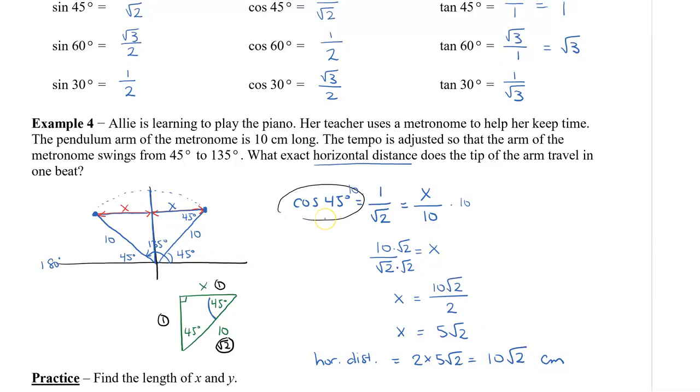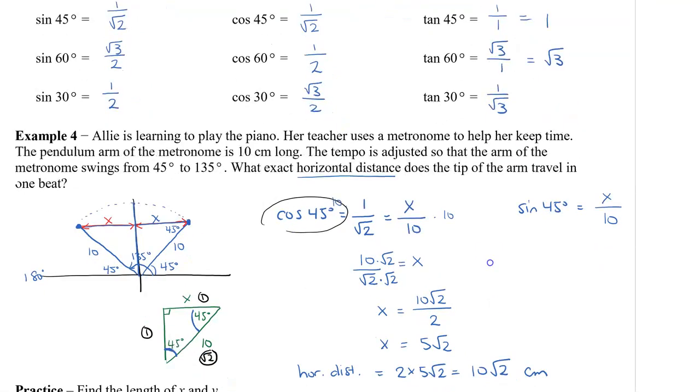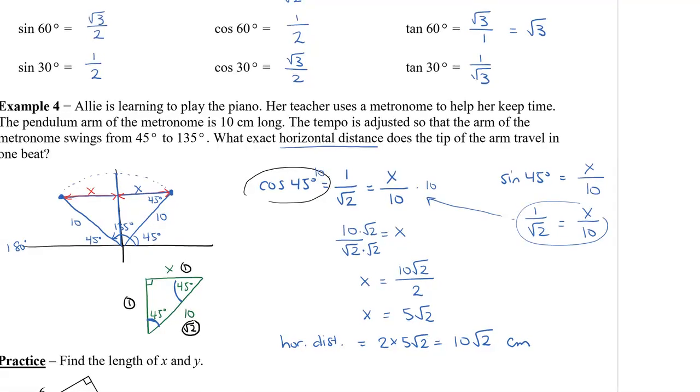We didn't have to use cosine 45. We could have also used sine 45 degrees. And that would be based on the angle here, now on the bottom. And we know that sine 45 degrees would equal x over 10. And if you have the special triangles memorized, sine 45 degrees is 1 over root 2 equals x over 10. And then you can see that this step is the same as what we had over here. And then you can follow the same steps.